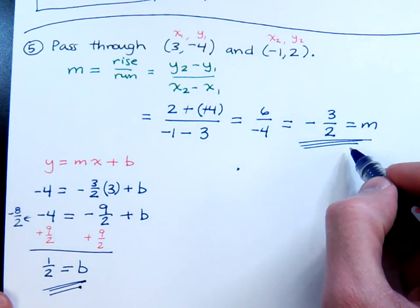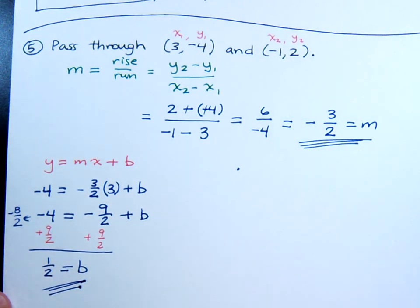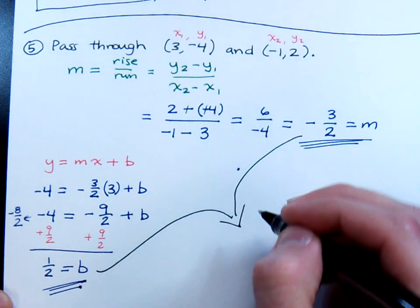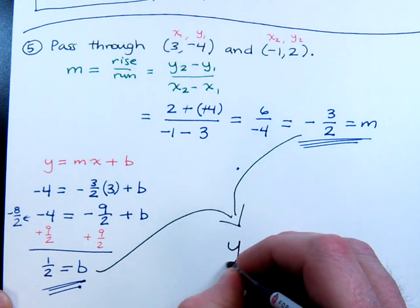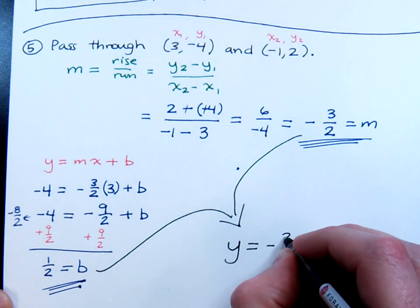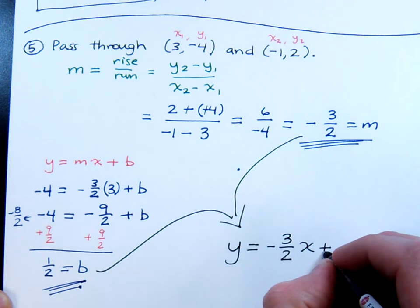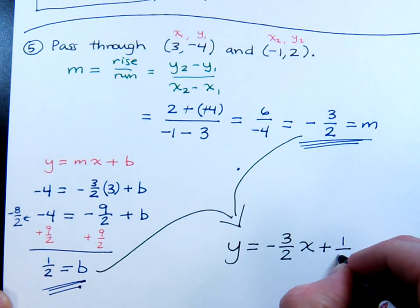You've got your slope. So I'm going to put these guys together to write my equation. y equals negative 3 halves x plus 1 half.